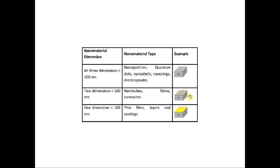Next, if I reduce in two dimensions by less than 100 nanometers, you will get something like a long tube or a wire — you call it a nanotube, nanowire, or nanofiber. And if all three dimensions are less than 100 nanometers — the material is reduced to nanoscale in all three directions — this is known as a nanoparticle, quantum dot, nano dot, nano shell, nano ring, or microcapsule.